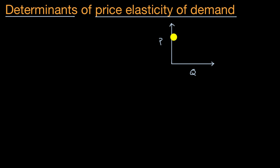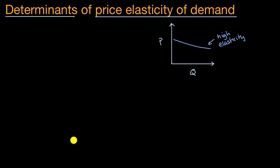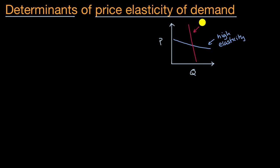High elasticity would look like a flatter demand curve — something like that. And low elasticity would mean that your percent change in quantity does not change much depending on your percent change in price. With low elasticity, the closer we get to a vertical curve, the lower our elasticity. So a low elasticity demand curve would look something like that.